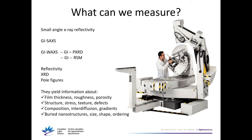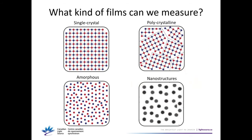And we're going to make it better. What kind of films can we envision? They can be single crystals, polycrystalline, or amorphous, and maybe they have buried nanostructures inside — so they can be of almost any kind.